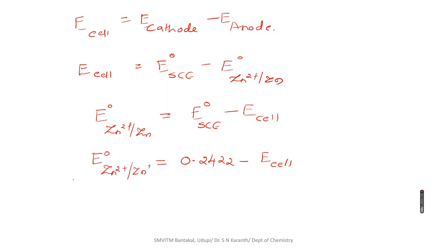In this way, we can detect the electrode potential of any electrode by knowing the value of E_cell. If you know the value of E_cell, you can calculate E° Zn²⁺|Zn.